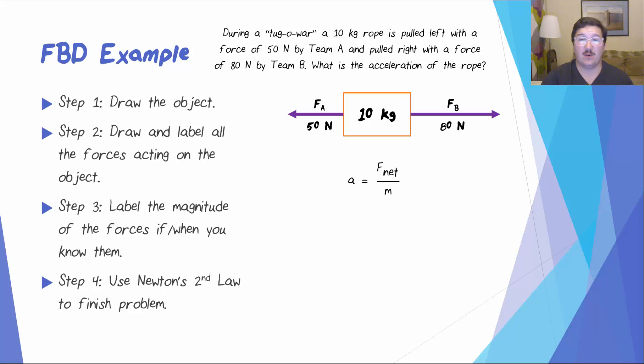Newton's second law tells us that A equals F net over M. The net force, which we haven't really talked about before, is either the difference between two forces that are in opposite directions, or the sum of two forces that are in the same direction. In this case, F net is 80 newtons minus 50 newtons, and we put that over the 10 kilogram mass. When we finish this calculation, we find that the acceleration of this rope is 3 meters per second squared. Since that is a positive answer, that means that the acceleration is in the direction of the force from team B.